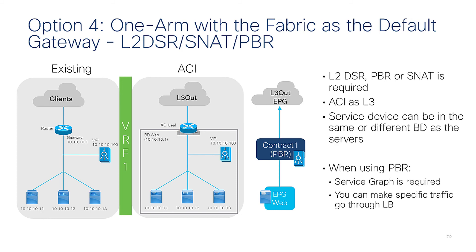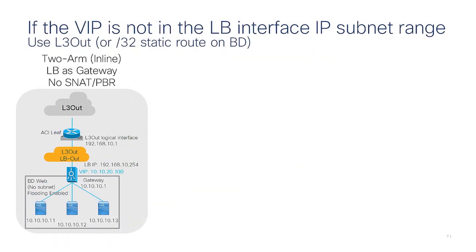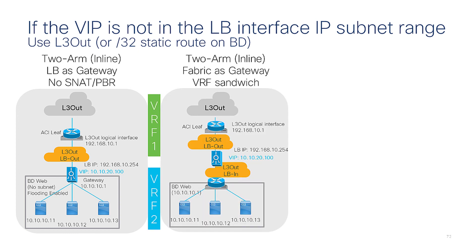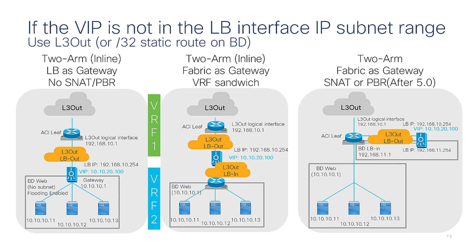Option four is the one-arm design with the fabric as the default gateway. Here you need just one bridge domain and one VRF. ACI does the routing, and when using policy-based redirect, a service graph is required. If the VIP address is not in the load balancer interface IP subnet range, you should use a layer three out on the virtual IP side (the outside of the load balancer). You could use the load balancer as the gateway with a L3Out and bridge domain, or use the fabric as the gateway with two VRFs and two L3Outs — or use a service graph redirect design with a L3Out for the VIP and an internal bridge domain for the inside interface of the load balancer.